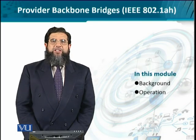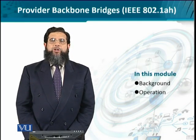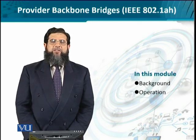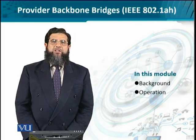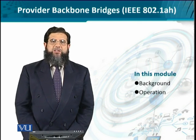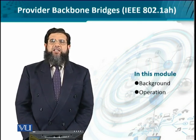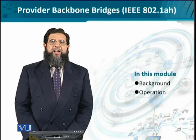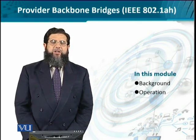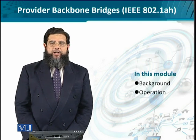Imagine multiple customer networks are connected to some provider networks. These provider networks may also be connected to other provider networks. You can take an analogy from the customer premises equipment that is connected to the access network, and that access network is connected to the core network.